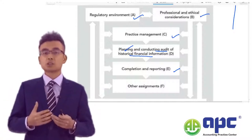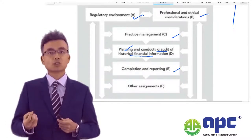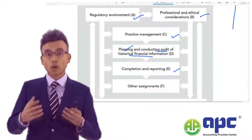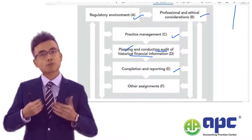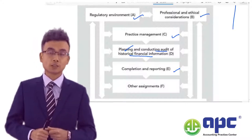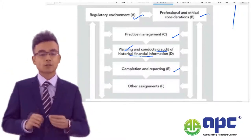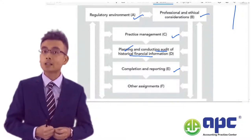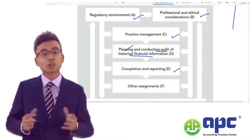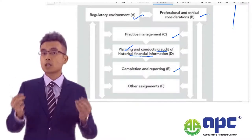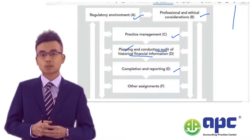From the auditor's point of view, we have to determine whether these events have been properly adjusted by management, and whether they are subsequent events where we have active or passive responsibilities according to ISA 560. There are also other areas in Part E, such as whether the client will be a going concern entity, and how we determine materiality overall after urging management to correct all errors found during the audit.